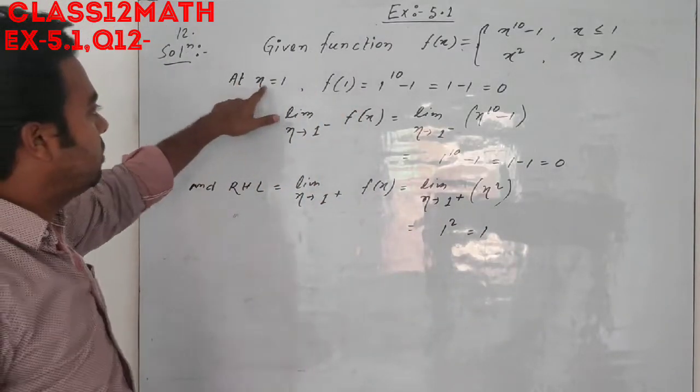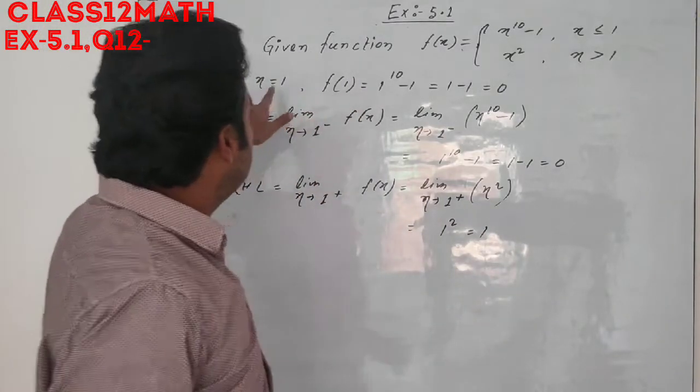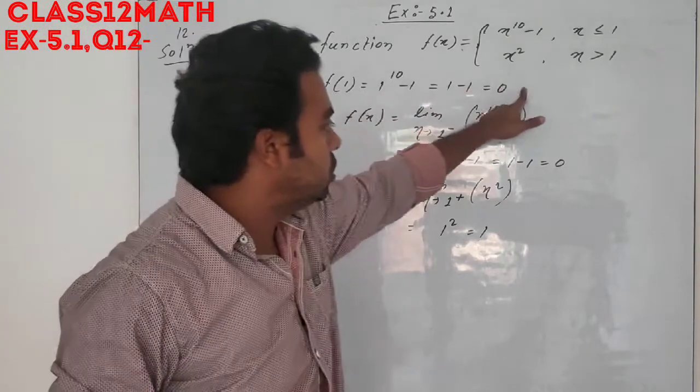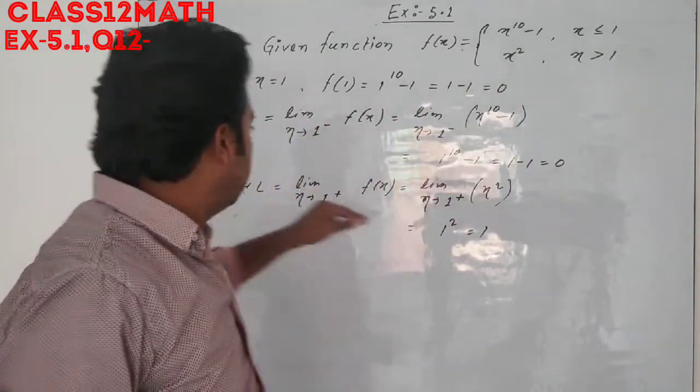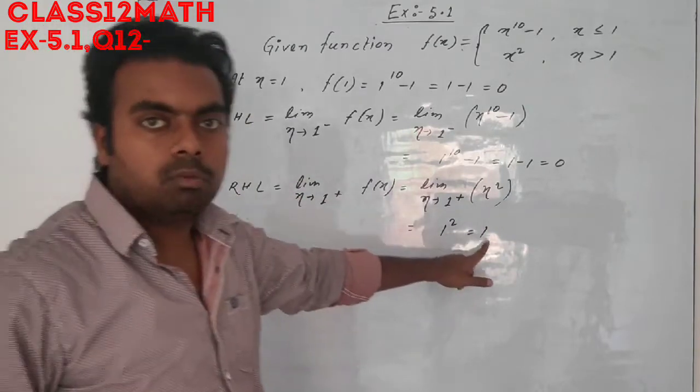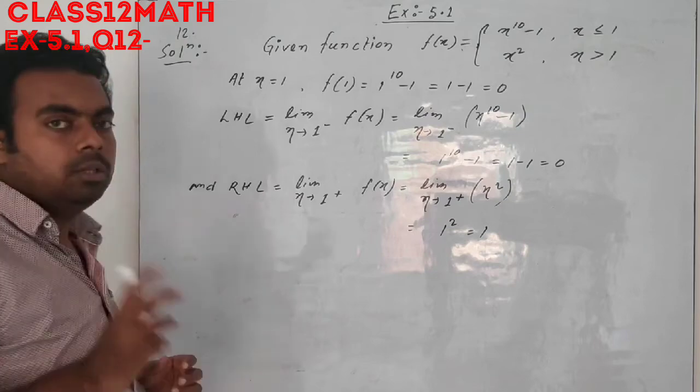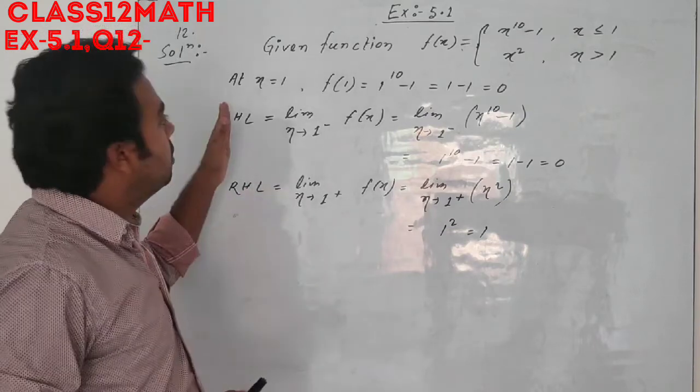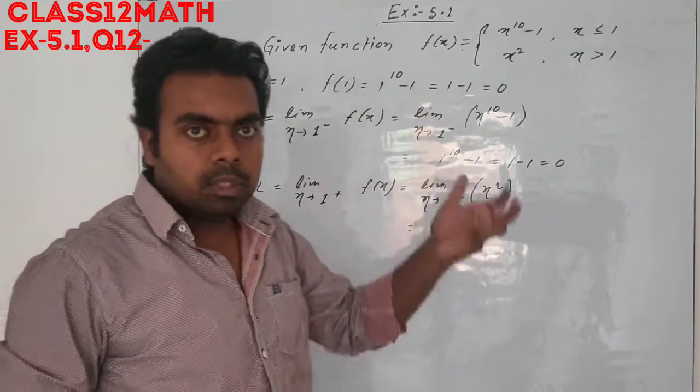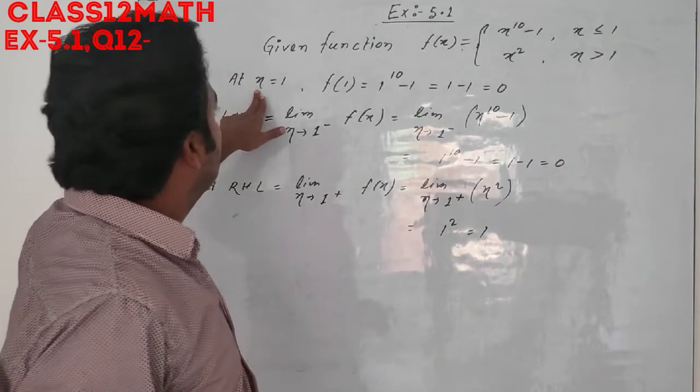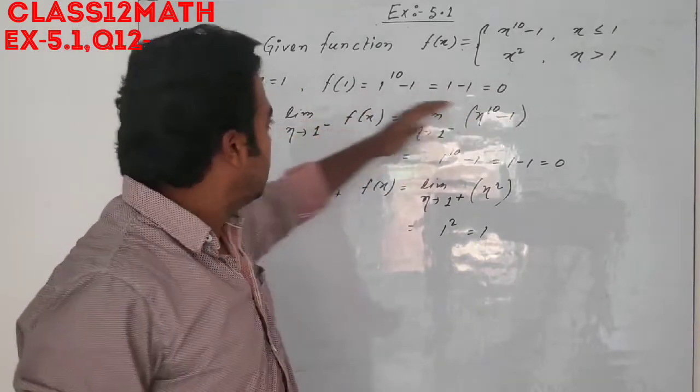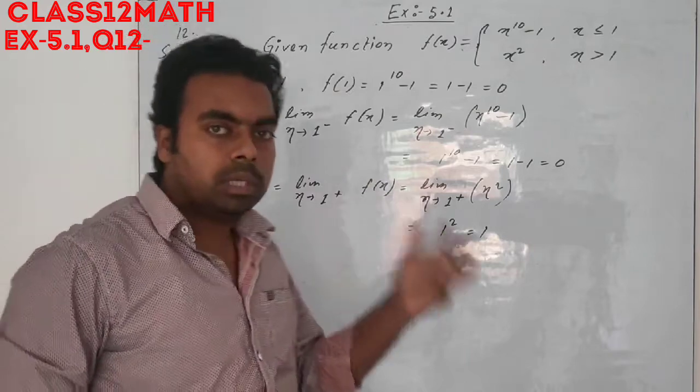We can see that when we calculated f(1), we got 0. Left-hand limit is also 0, but right-hand limit is 1. To check continuity, three conditions must be equal: f(1), left-hand limit, and right-hand limit should all be equal.